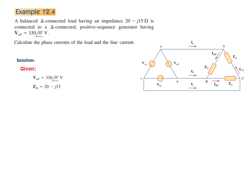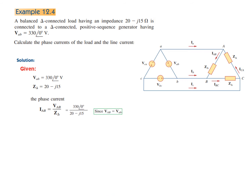IAB is given by VAB divided by Z_delta. VAB = 330∠0° divided by the impedance. Note that V_AB (small) equals V_AB (capital) — they are the same. Solving this, we find the phase current IAB = 13.2∠−36.87° amperes.